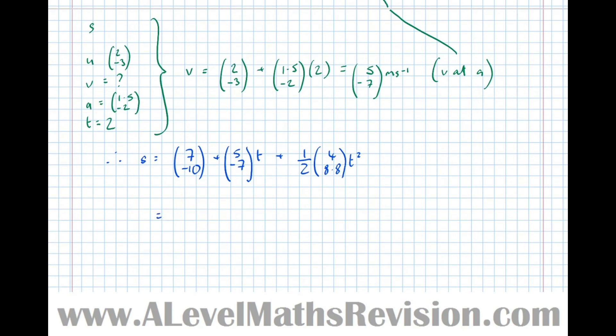Let's simplify that and write it as a single vector. That's equal to 7 plus 5T, and a half of 4 is 2, so 2T squared. The bottom becomes minus 10 minus 7T, and a half of 8.8 is 4.4 plus 4.4T squared. So that's our position vector at any time after the particle hits A.